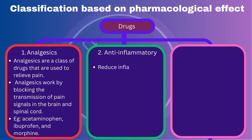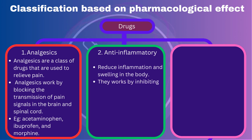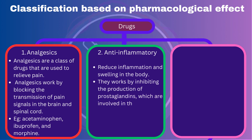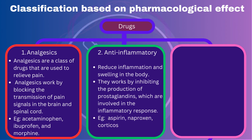Anti-inflammatory drugs: Anti-inflammatory drugs reduce inflammation and swelling in the body. They work by inhibiting the production of prostaglandins, which are involved in the inflammatory response. They include drugs such as aspirin, naproxen, and corticosteroids.